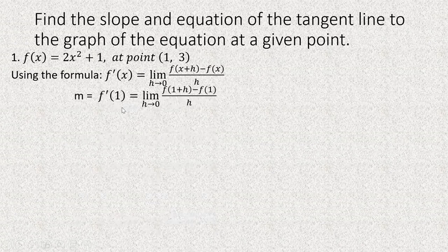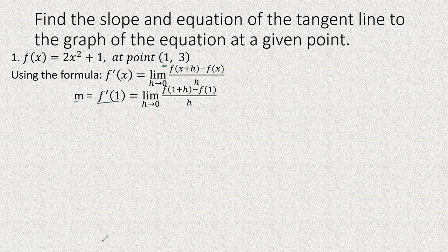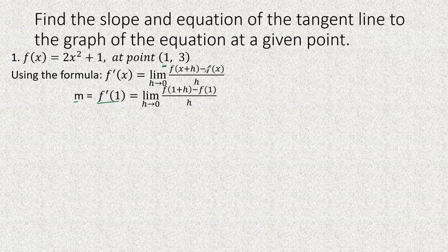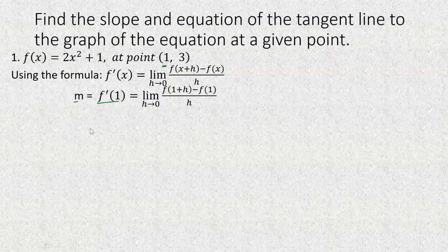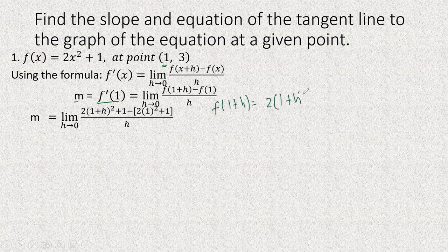We're going to recall the formula of the derivative. Ang gagawin natin is we're going to find the slope first. Yung f prime of 1 natin — bakit 1? Kasi eto yung value of x. So eto po yung slope natin. To find the slope, we're going to find the derivative at this point or the value of x. Yung x natin napapalitan siya sa 1. So ang gagawin natin dito is hahanapin na natin si f of 1 plus h. Yung 1 plus h natin, yun yung x natin. So yung f of 1 plus h natin ay magiging 2 times 1 plus h squared plus 1.